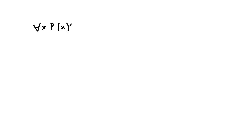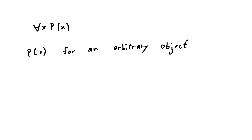Universal instantiation allows us to infer from a universal statement a statement about a particular object in the domain of x. We can also infer a universal statement — for all x, p of x — if we can show p of c for an arbitrary object c in the domain of x.